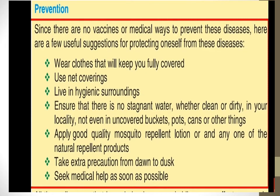At the end of this chapter we will learn how to prevent these diseases. Since there are no vaccines or medical ways to prevent these diseases, here are useful suggestions. First, wear covered clothing so mosquitoes cannot bite. Second, live in a hygienic surrounding — keep your area neat and clean. Third, ensure there is no stagnant water, whether clean or dirty, in your locality — not even in uncovered buckets, pots, or cans. You can also apply good quality mosquito repellant.